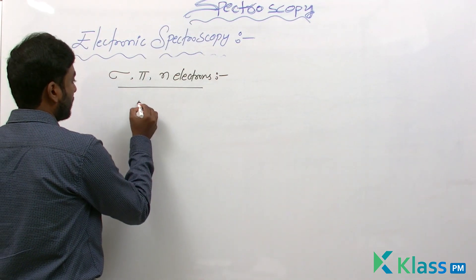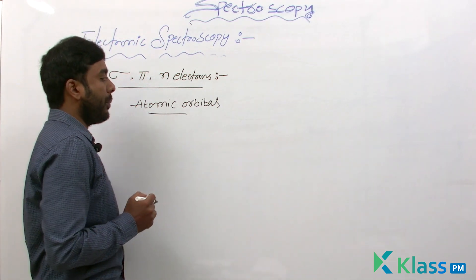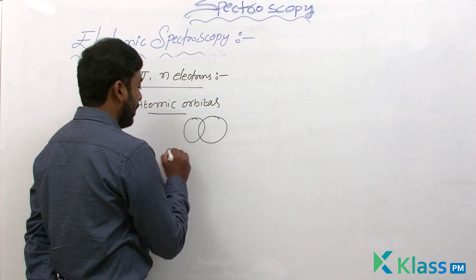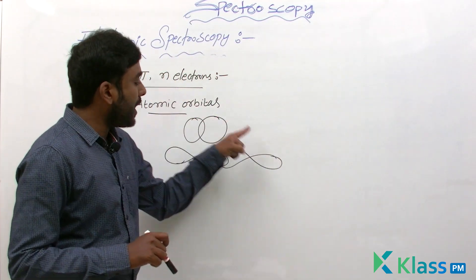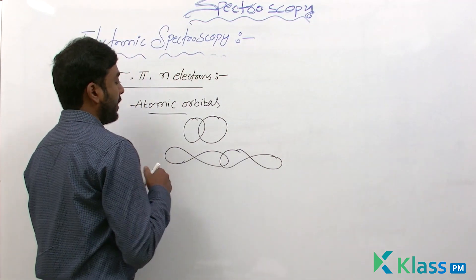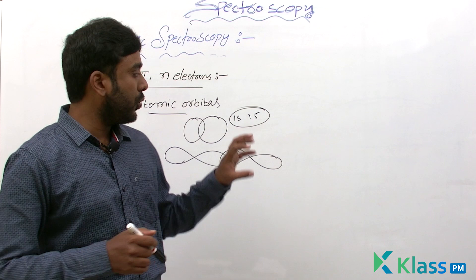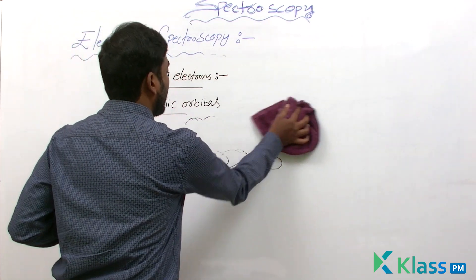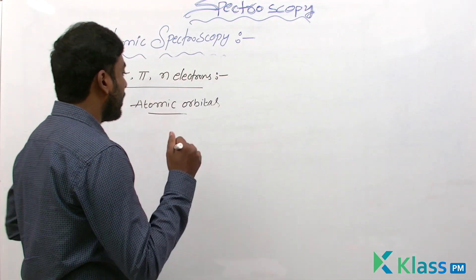When two or more atomic orbitals — such as 1s, 2s, 2p, 3p, 3d — overlap while forming a bond, molecular orbitals are formed. This overlapping occurs only between orbitals of the same energy; for example, 1s overlaps with 1s, and 2s overlaps with 2s. When two atomic orbitals of the same energy overlap, two molecular orbitals are formed.